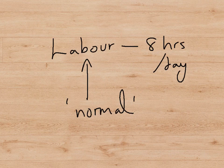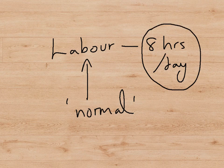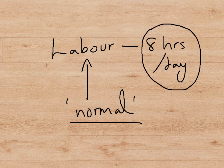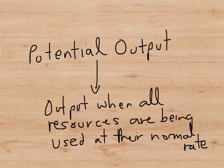By normal, let's see what we mean by normal. A worker normally works eight hours a day in a developed economy. And so, when all the workers are working eight hours a day, that would be the potential output of the labour. And if we apply this concept of normal working to land and capital and enterprise as well as labour, we can see that that will be the combined potential output of the economy. So, we can talk about potential output as the output when all resources are being used at their normal rate.